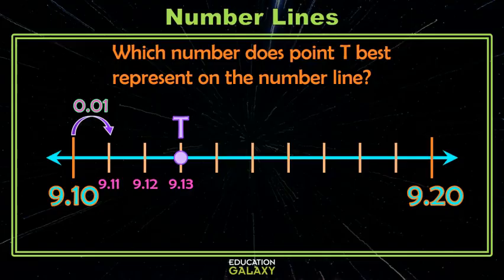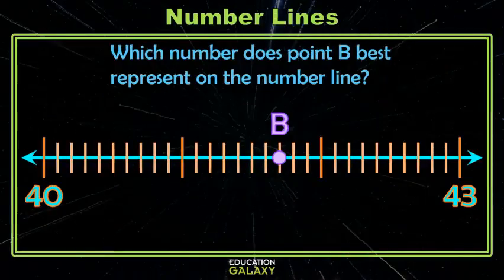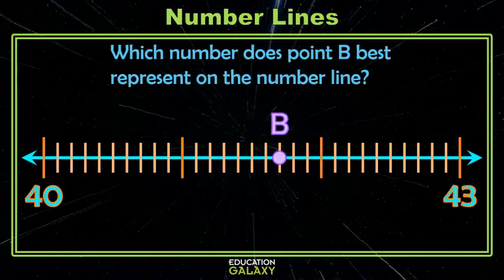Who wants to do one more example? I do. Okay. Here we want to know, where is point B? So we've got 40 on one end and 43 on the other end, and a bunch of stuff in between. And it looks like this is 1, 2, 3, 4, 5, 6, 7, 8, 9, 10, so that makes this one 41. Then this one is 42.